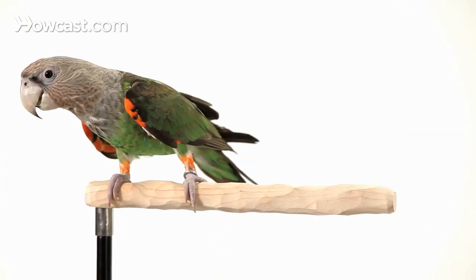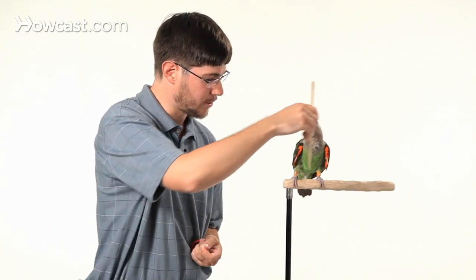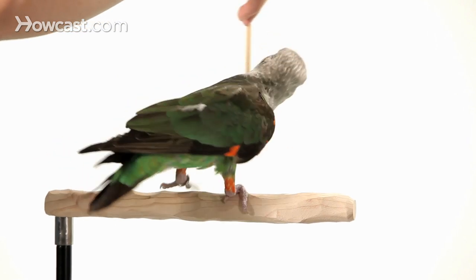So I'm going to just make a 360 degree motion with the target stick above or beneath him to have him follow the stick to learn the turning motion. Truman, target. Didn't follow all the way, so I'm not going to reward him. I'm going to try again.